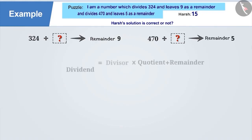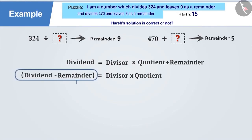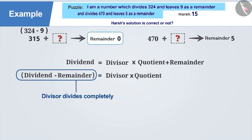If we subtract the remainder from dividend, the number obtained is completely divisible by the divisor. This means, by subtracting 9 from 324, we get 315 and this is completely divisible by the required number.